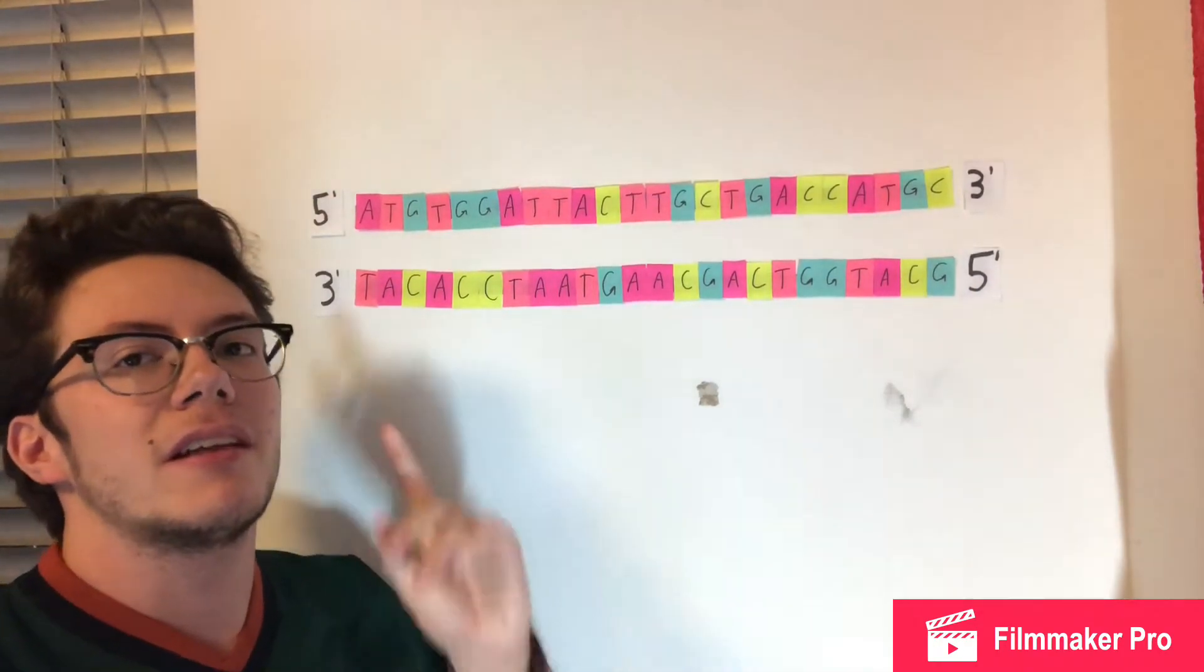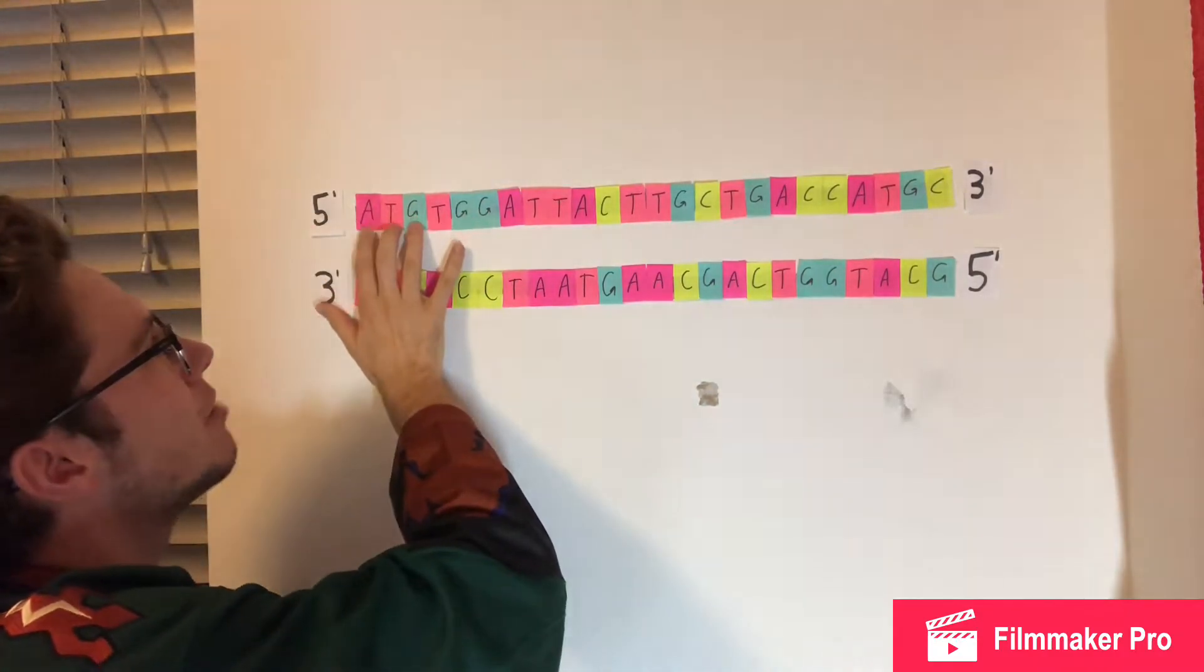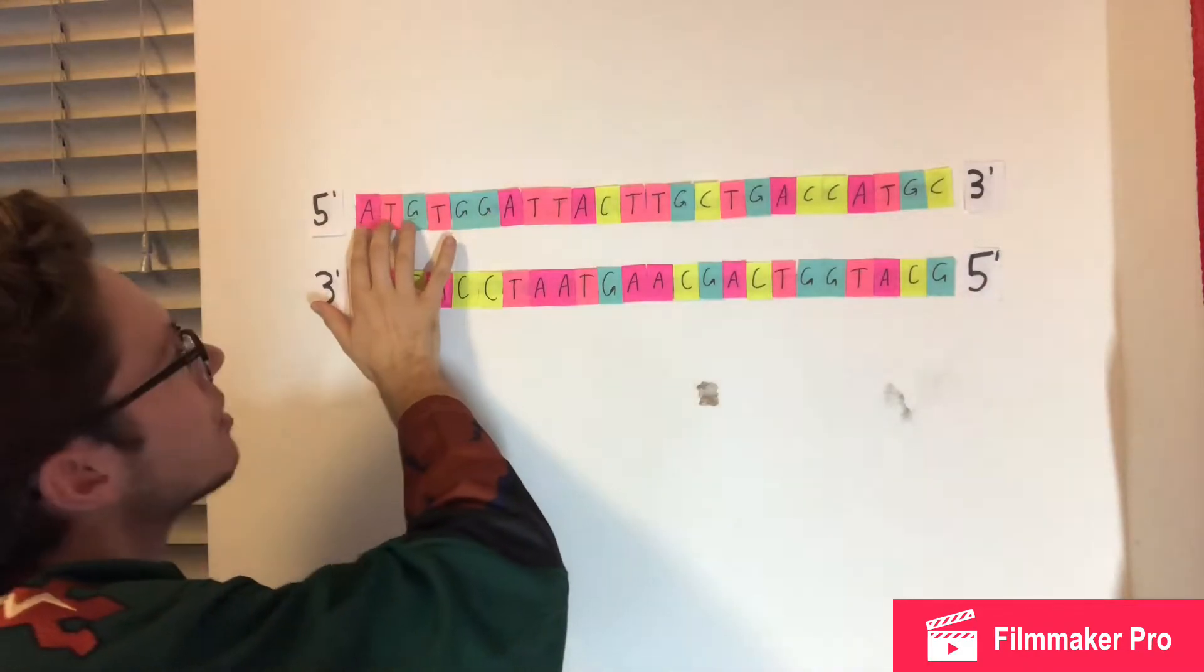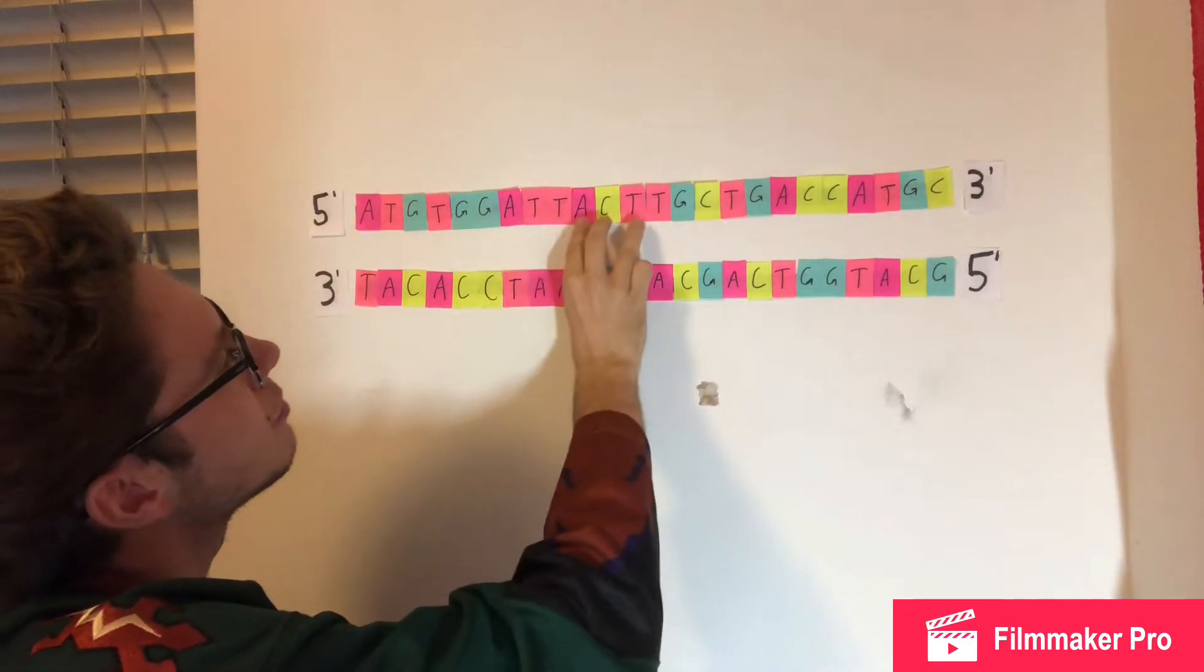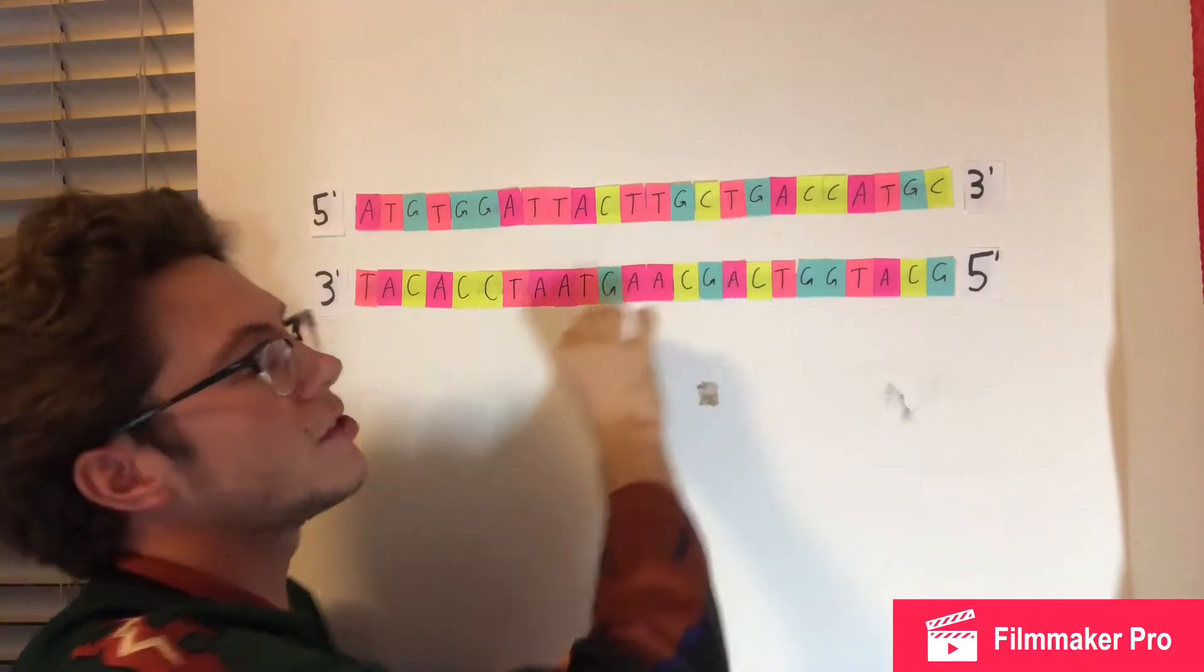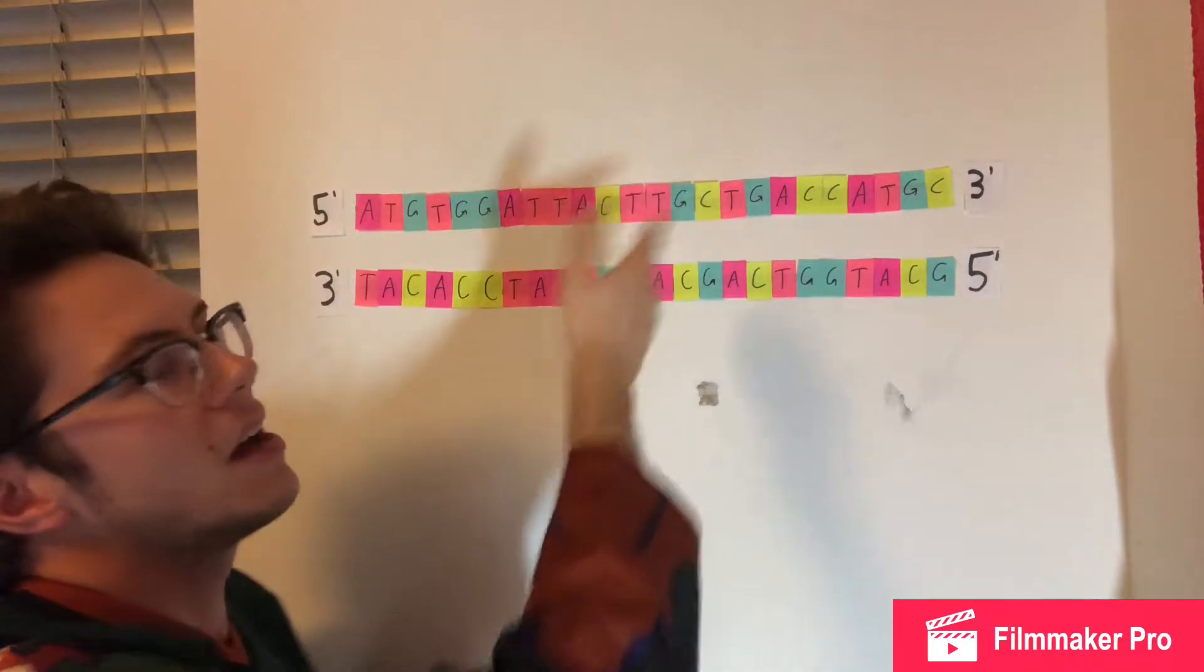Since transcription happens in the five prime to three prime direction, we're going to start at the top strand up here. Right away we have an AUG start codon, so then we're going to start counting: one, two, three, four, five. And then we have a UGA which is a stop codon, but since this is five amino acids long, not really what we're looking for.